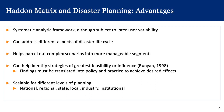The Haddon Matrix also has the advantage of addressing different aspects of the disaster life cycle — prevention, mitigation, preparedness, response, and recovery. Prevention and preparedness align with the pre-event row, response aligns with the event row, and recovery aligns with the post-event row. It can help identify strategies of greatest feasibility or influence, and those findings must be translated into policy and practice.